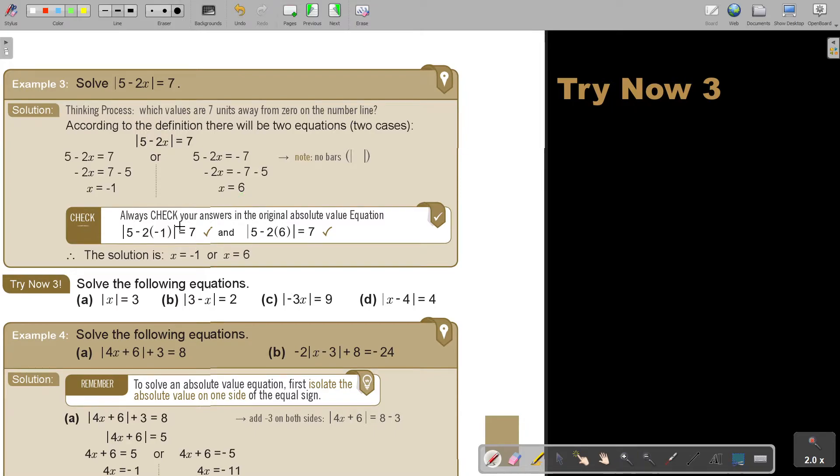Very important: always check your answer in the original absolute value equation. Substitute it in and see if this side is equal to that side. The solution is X = -1 and X = 6.